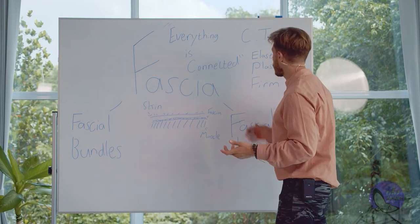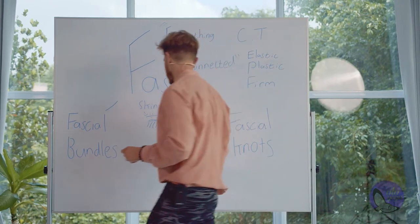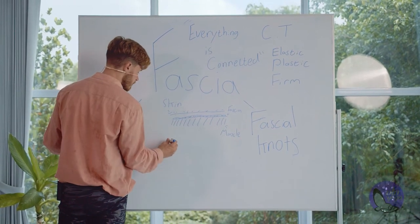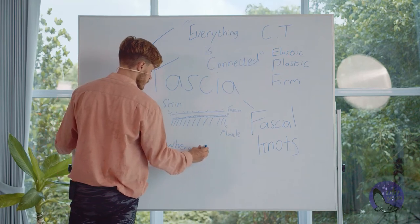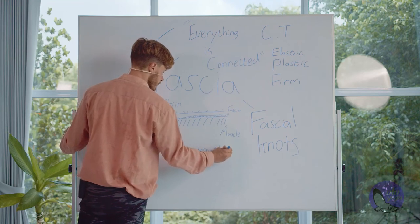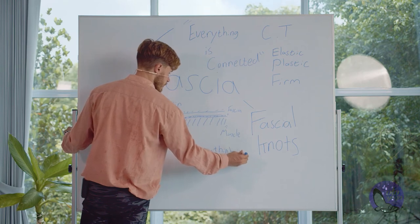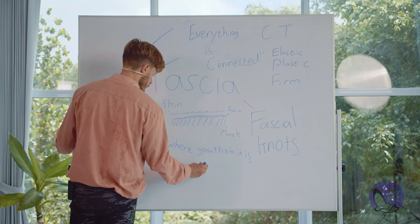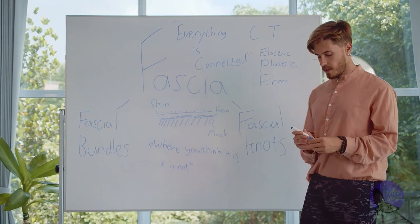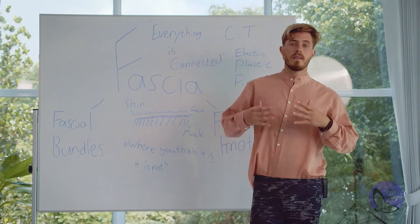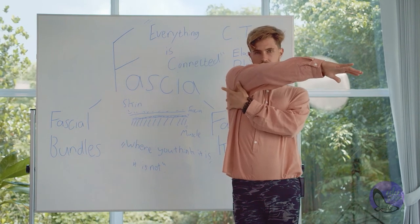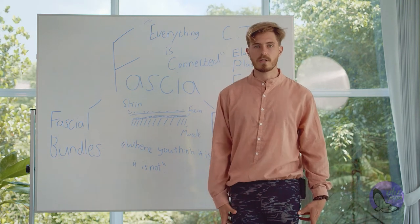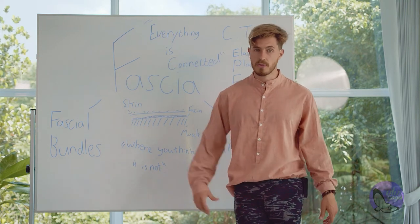This brings up an expression: sometimes where you think it is, it isn't. I might think the tension I feel in my shoulder when doing a movement is because I have tension in my shoulder — but it's actually because there's a bundle somewhere else. Or in a forward fold, I think it's my hamstrings or my back curving, but no, it's somewhere else entirely.